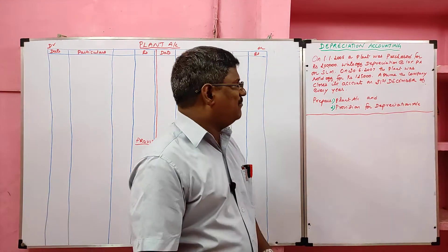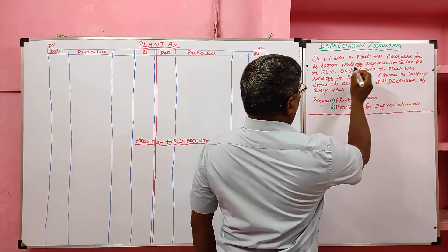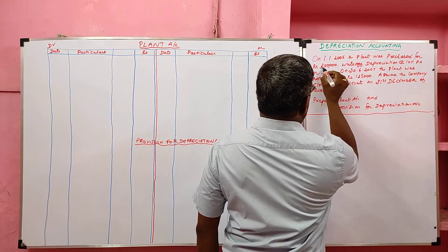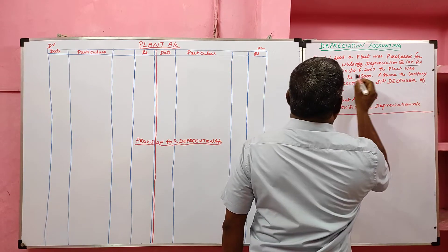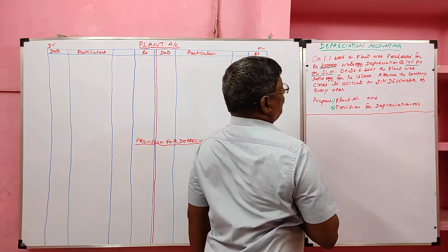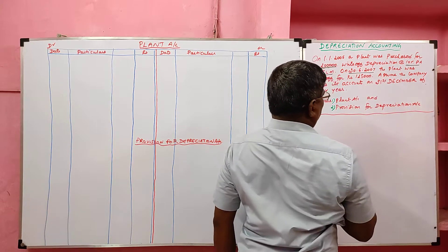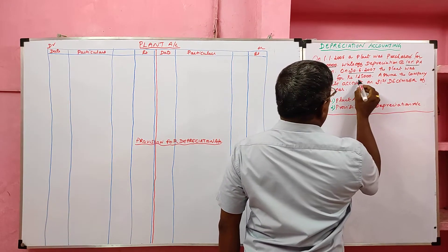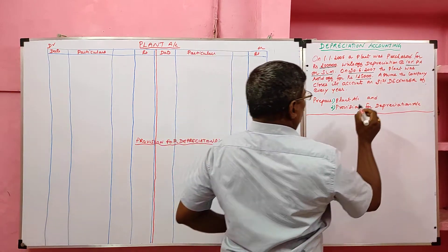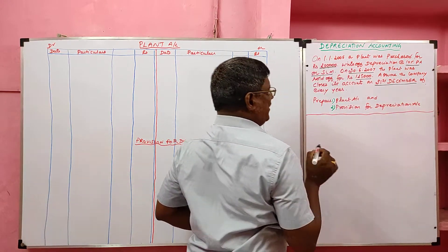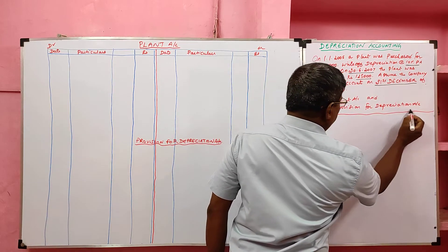Now look at the problem. On 1st January 2005, a plant was purchased for rupees 2 lakh. Write off depreciation at 10 percent per annum on straight line method. On 30th June 2007, the plant was sold for rupees 1 lakh 25,000. Assume the company accounts are closed on 31st December of every year. Prepare the plant account and provision for depreciation account.